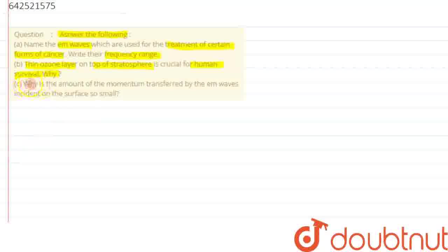And third part says, why is the amount of momentum transferred by the electromagnetic waves incident on the surface so small? So, let's begin with the first part of the question, that is part A.